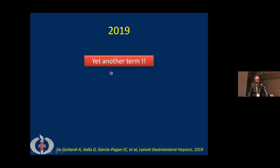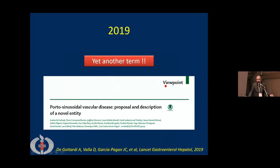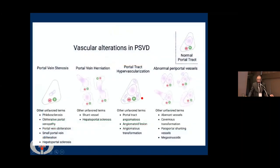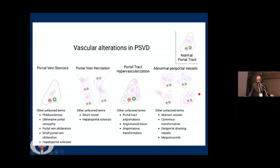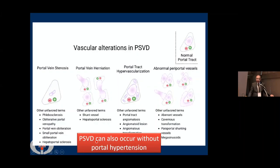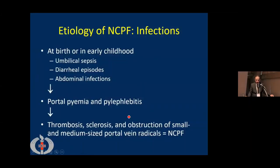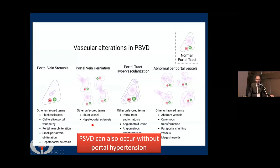In 2019, a novel term was introduced: portosinusoidal vascular disease (PSVD). This describes vascular alterations including portal vein stenosis, portal vein herniation out of the portal tract, connections between two portal tracts, hypervascularization, and abnormal periportal vessels. Importantly, PSVD can occur without portal hypertension — it is a histopathological finding where the patient may or may not have portal hypertension. Since this talk focuses on non-cirrhotic portal hypertension, I will skip PSVD for now.